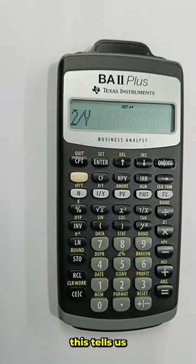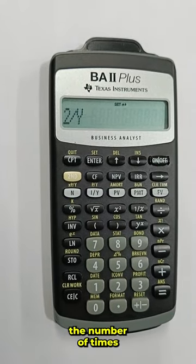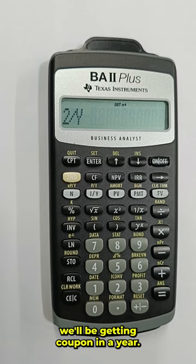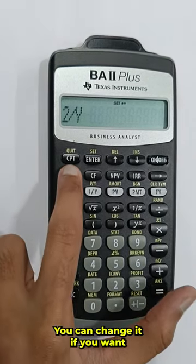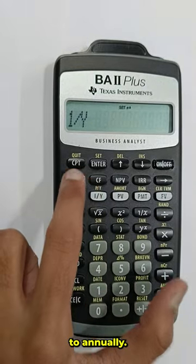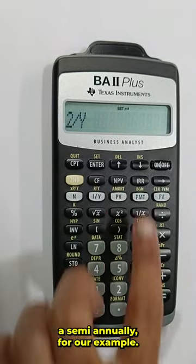Next this tells us the number of times we'll be getting coupon in a year. So this 2/y tells us that it's semi-annually. You can change it if you want to annually, but let's keep it as semi-annually for our example.